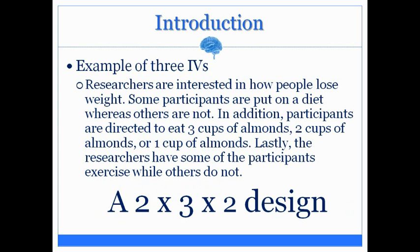This can be considered a two-by-three-by-two design, or a two-by-three-by-two factorial design. The first number indicates the first independent variable has two levels. The second number indicates the second independent variable has three levels. The third number indicates the third independent variable has two levels.